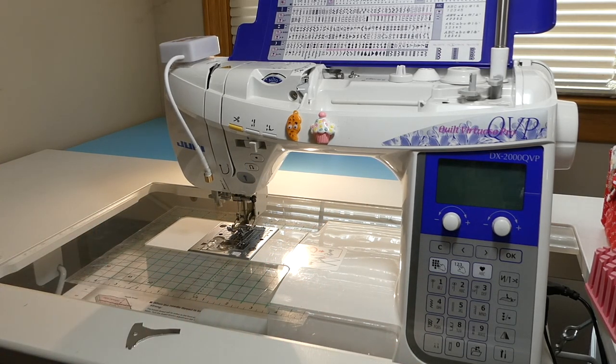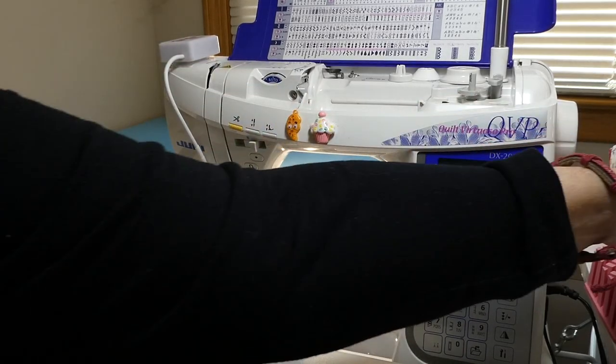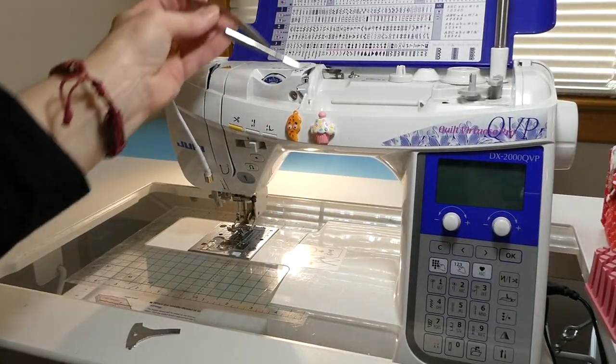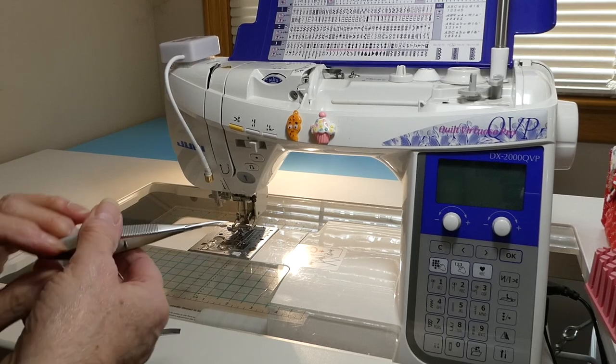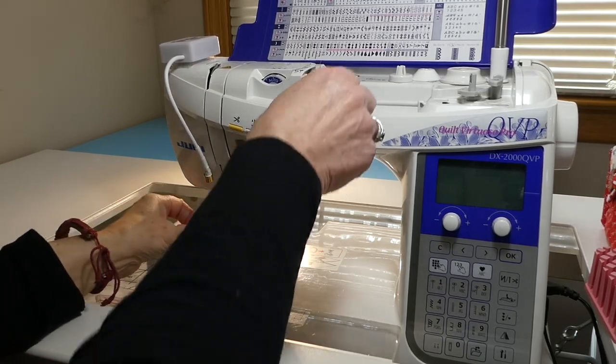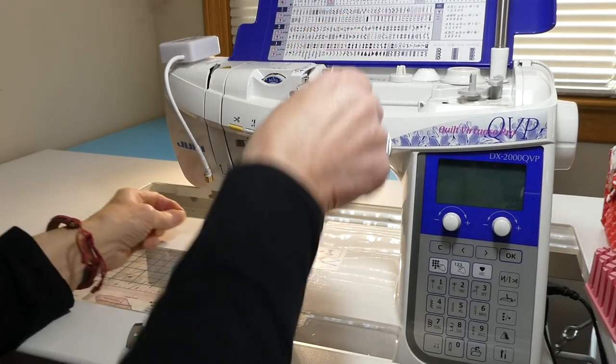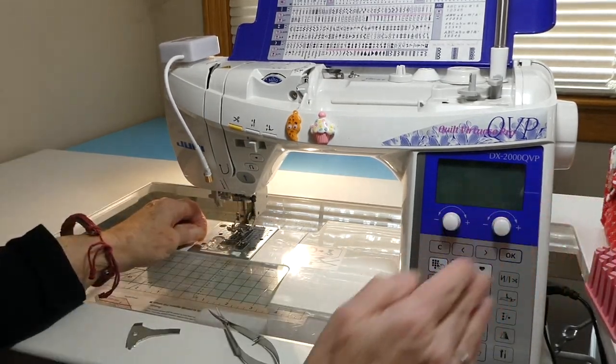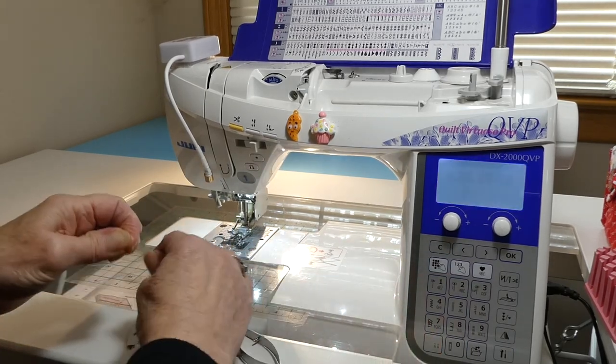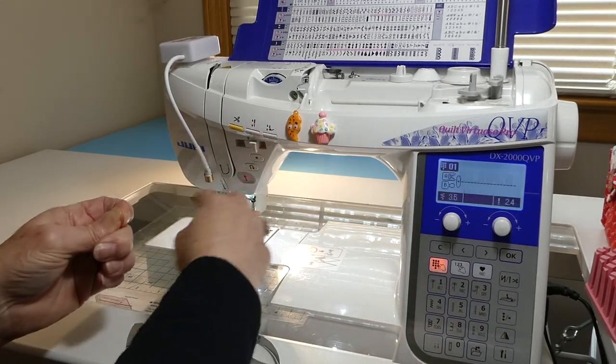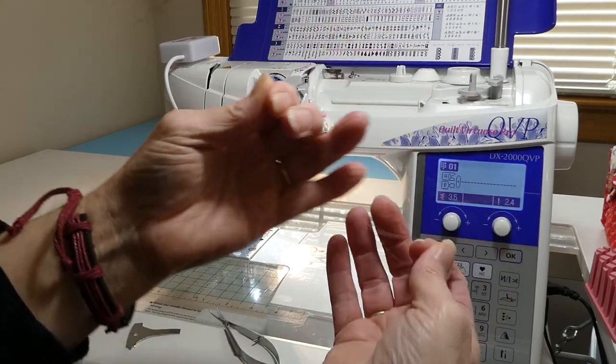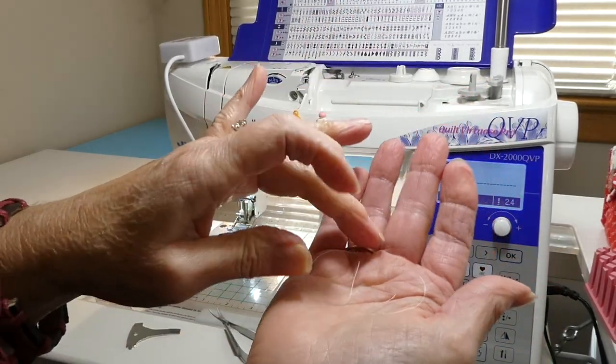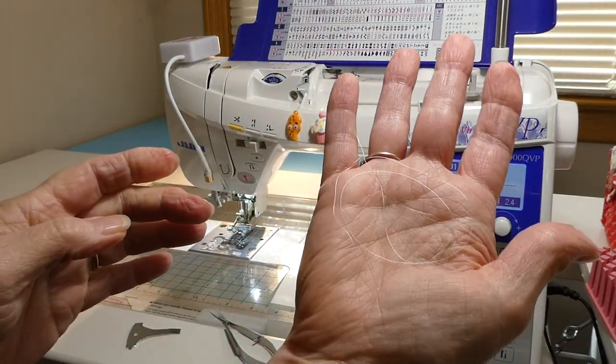So to start with, we're going to unthread it. And when you're unthreading your machine, always snip it from the top and then pull it through the bottom. I have a very fine thread on here, so it may be really hard to see.